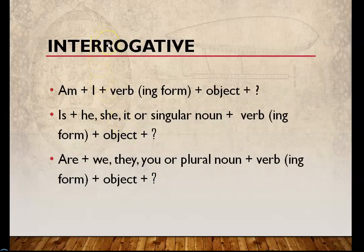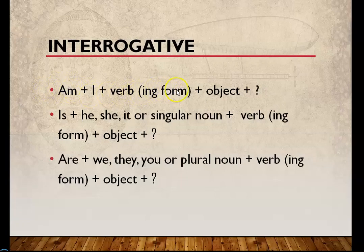Interrogative — that is, a question sentence. To make an interrogative sentence, always remember: if we have helping verbs in the sentence, we always bring them to the beginning. Formula: Am + subject I + ing form of the verb + object + question mark.